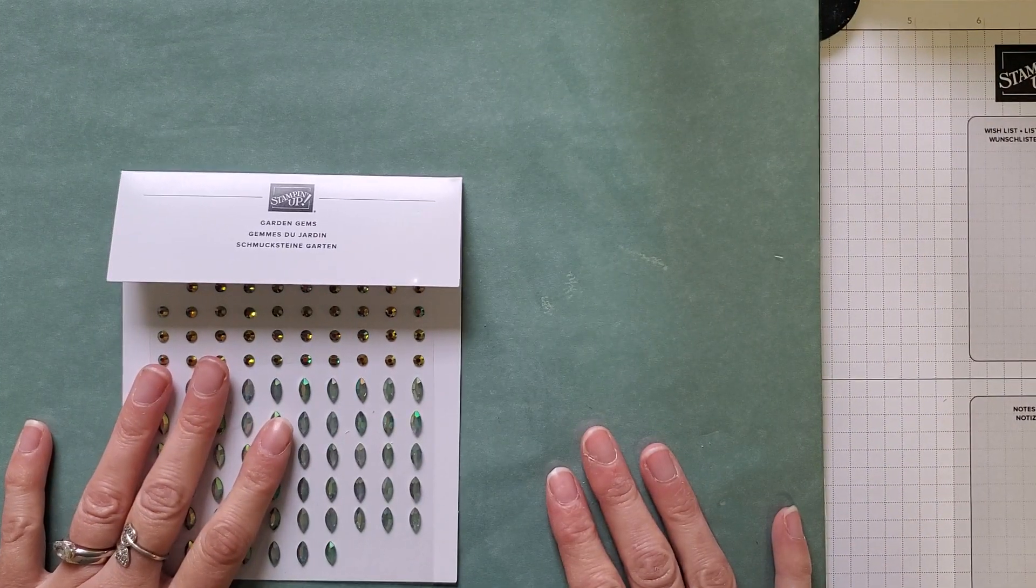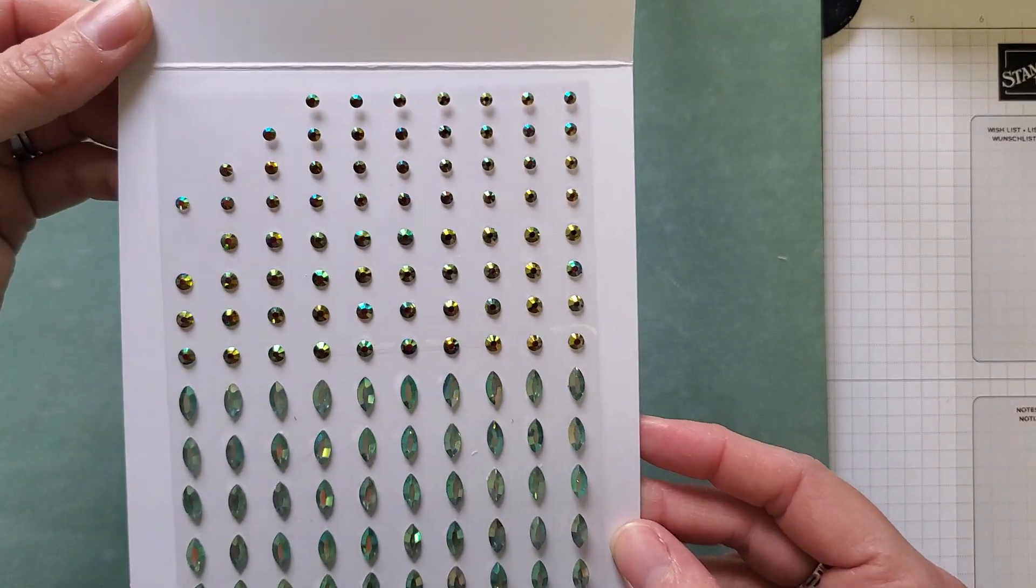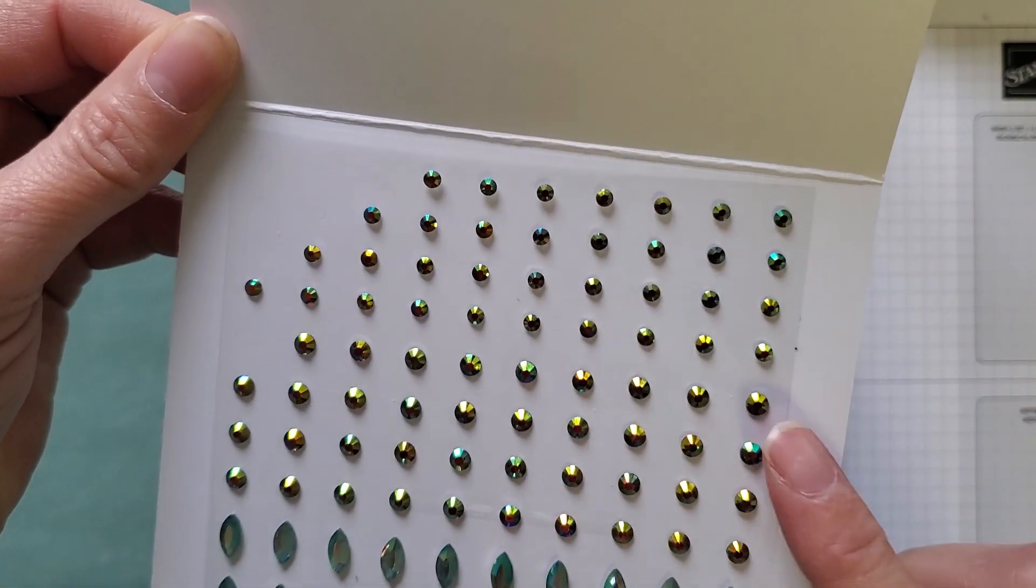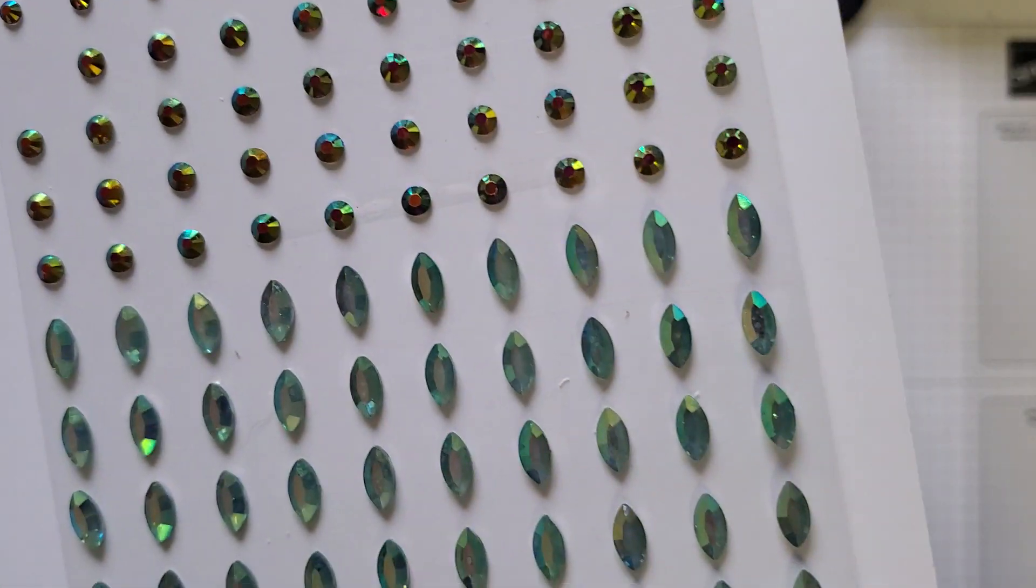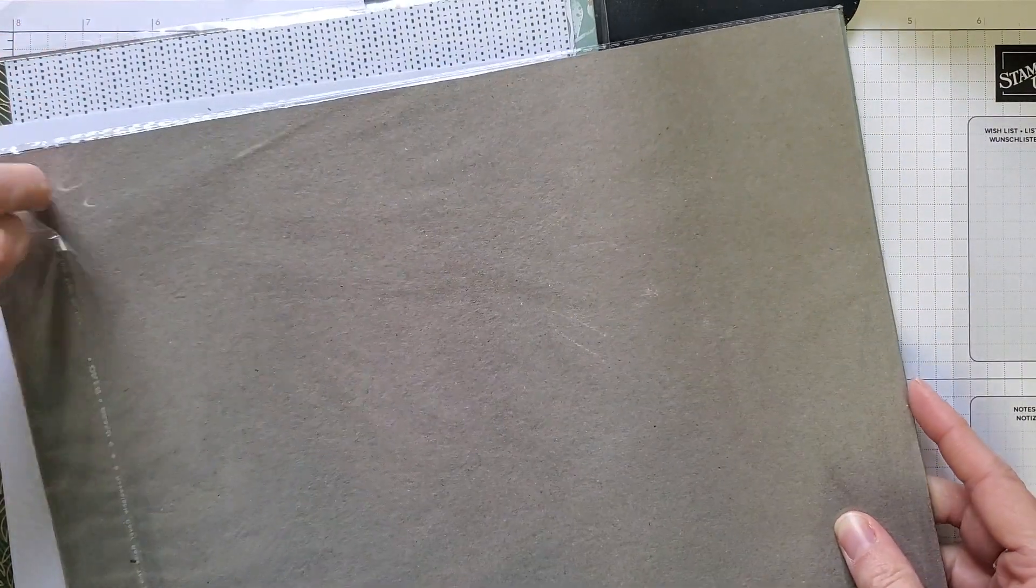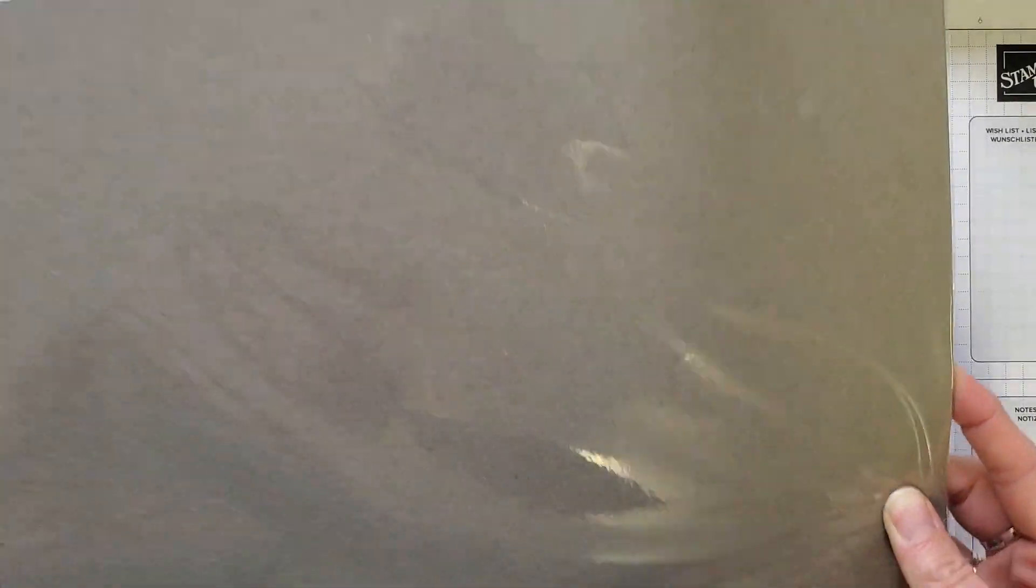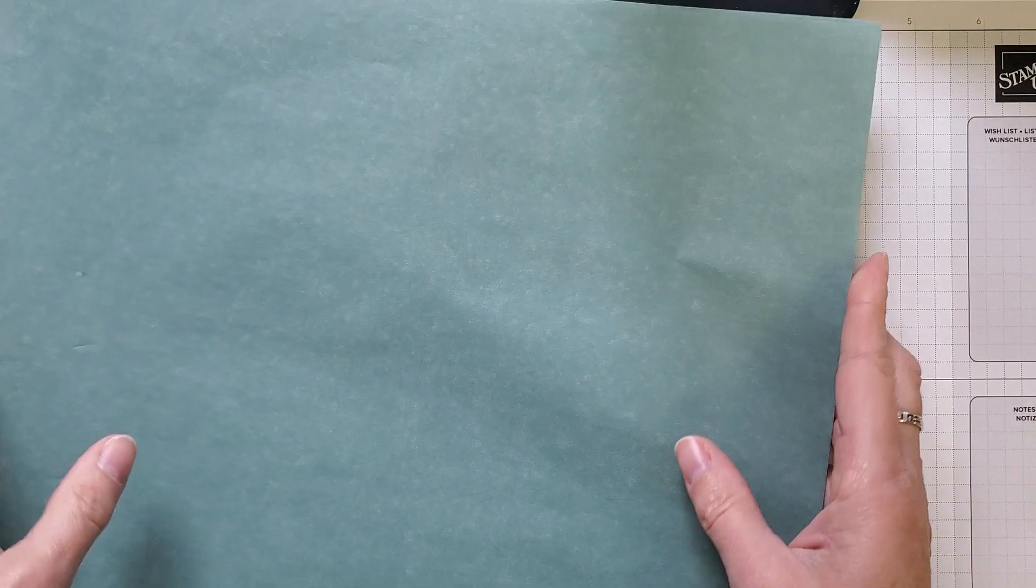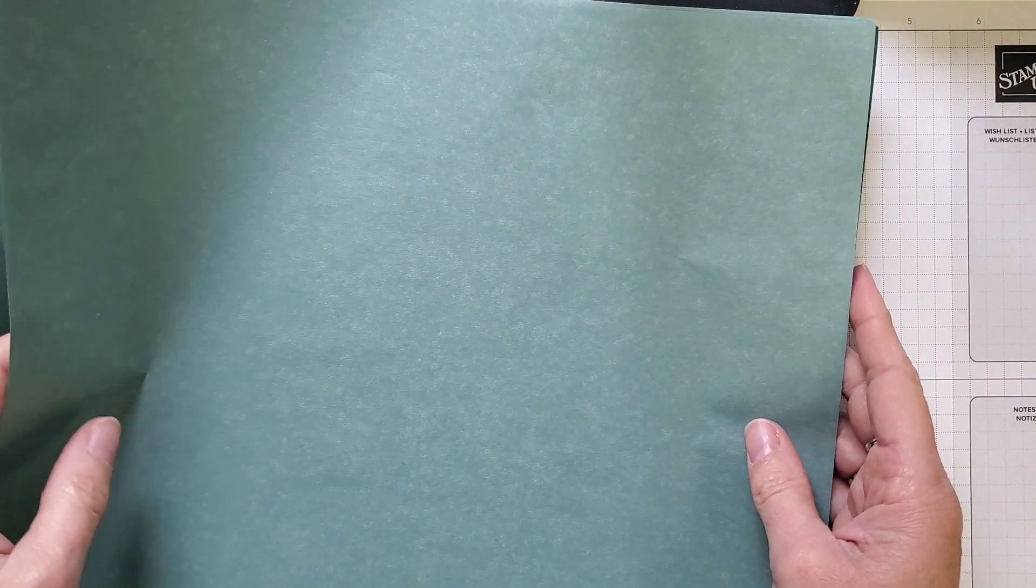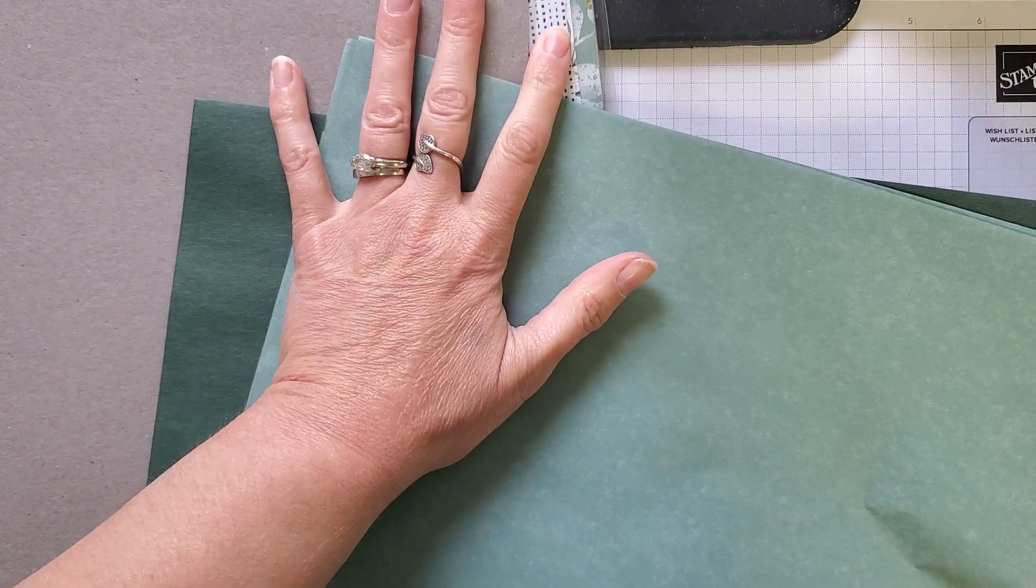Also included in the suite are these really cool gems. You've got two different types. These look like evening evergreen and these look like soft succulent for colors. And then these are classic rhinestones, and these are almost like teardrop rhinestones. So those are really pretty. Also part of the suite is this 12 by 12 cotton paper.